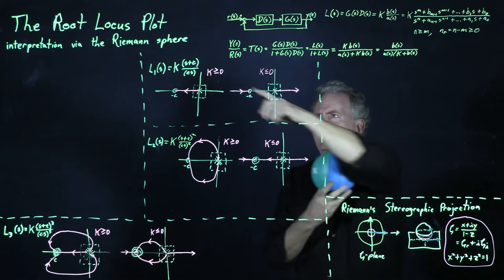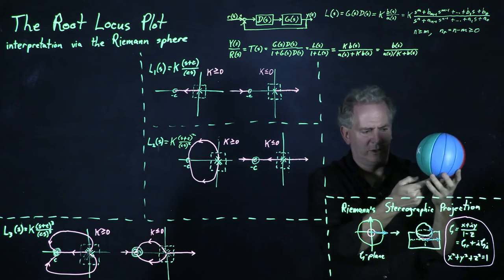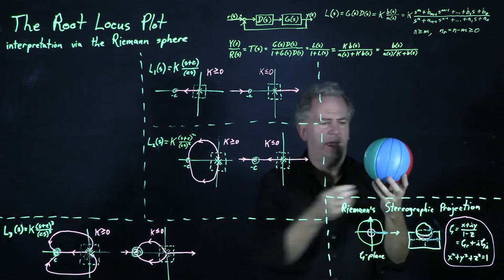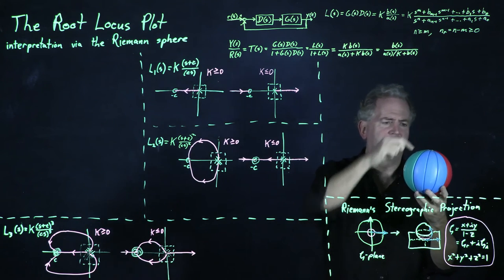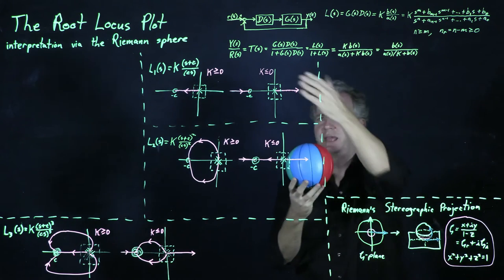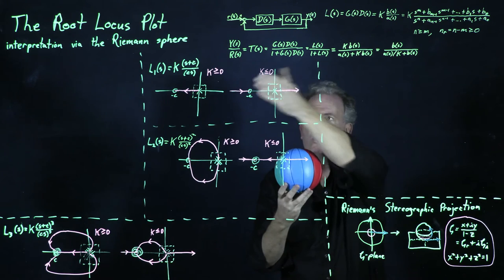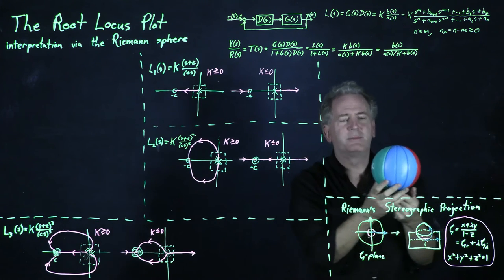And so in the case with k positive, we march from the south pole up to the x. And in the limit that c gets big, it's moving up here. In the case with k negative, to understand what's happening here, we're simply marching up the other side of the sphere.